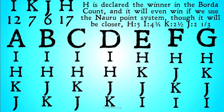H is going to win even if we use the Nauru point system, though it will be much closer. H has five points, I has four and three-quarters points, K has two and a half points, and J has two and one-third points. You'll notice the Nauru system puts more emphasis on first-place votes. However, it's interesting to note that the Borda Count and the Nauru Borda Count don't always agree — there are situations in which they don't line up.